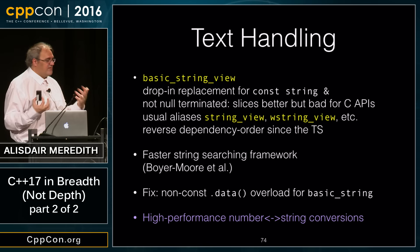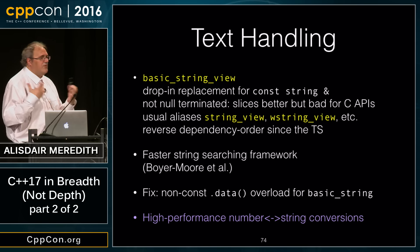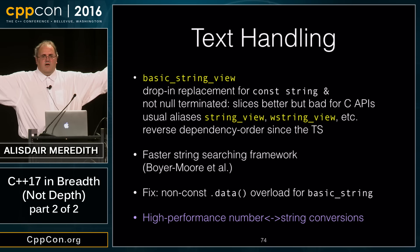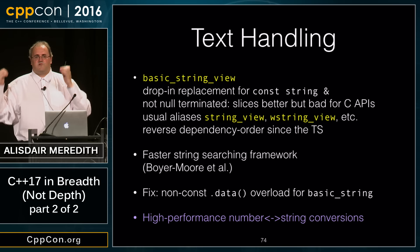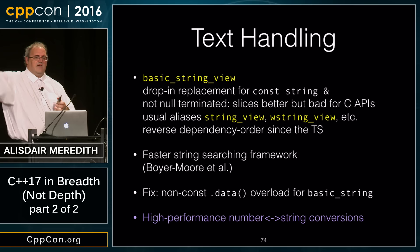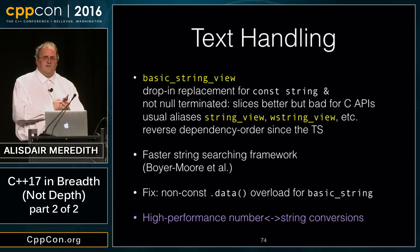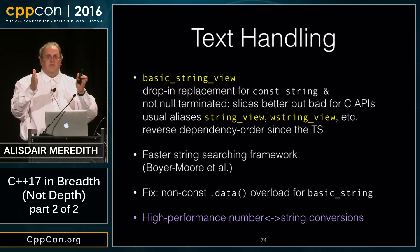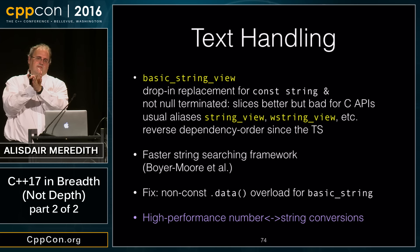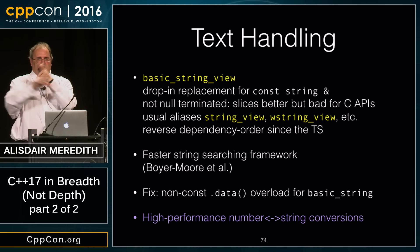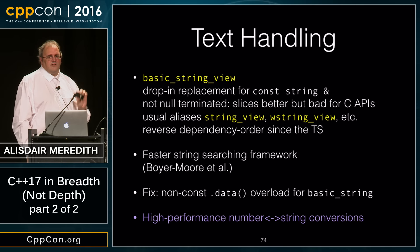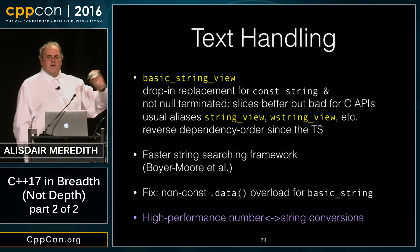We also have a faster string searching framework using the Boyer-Moore algorithms. The idea is: if you're searching for a common string across many bodies of text, you construct a small finite state machine to describe the search. Matching seven characters but failing on the eighth means you can usually jump seven characters ahead in the sequence, enabling very efficient repeated searching of the same pattern in different bodies of text.